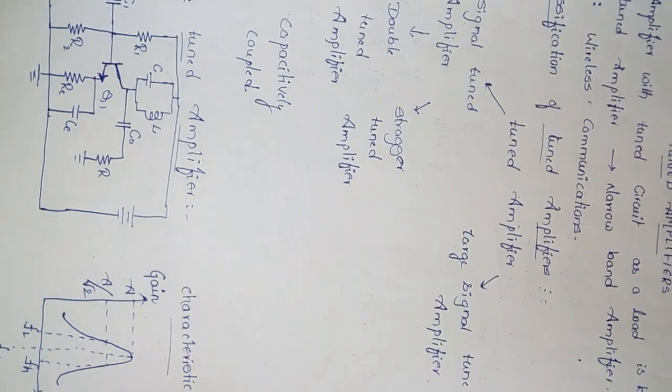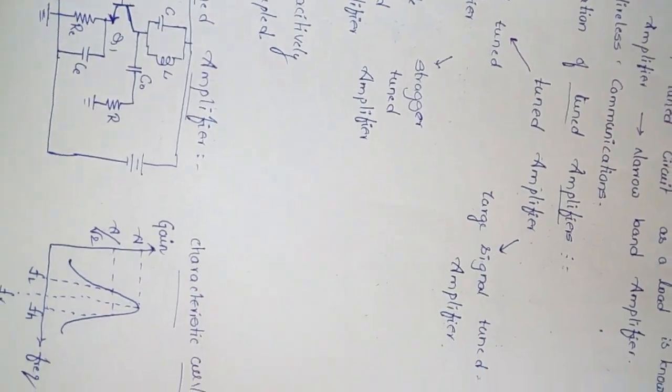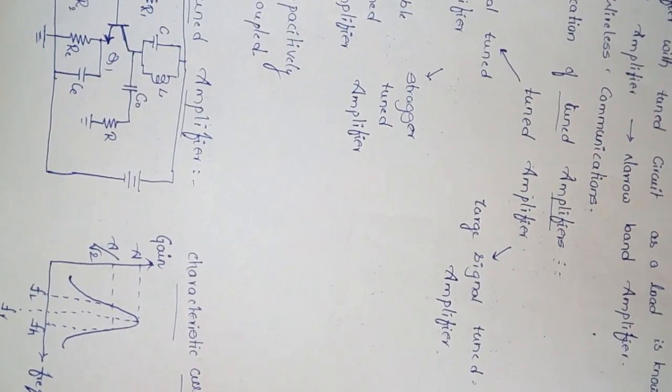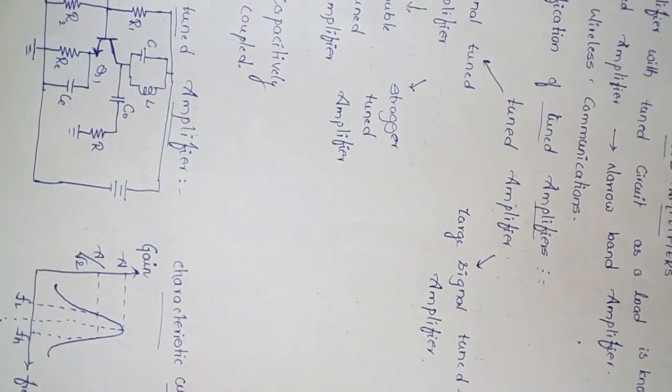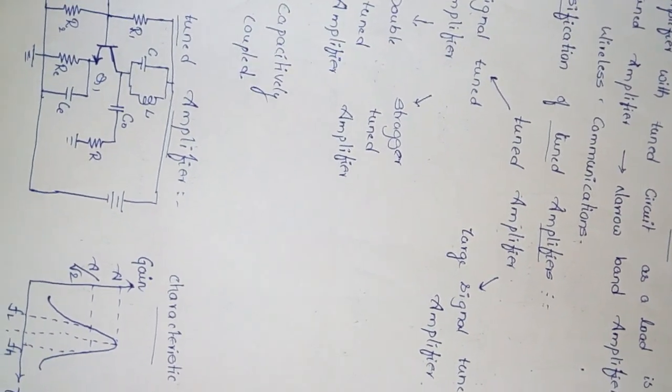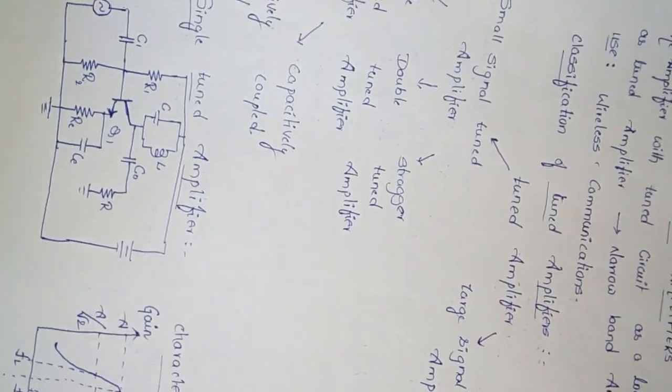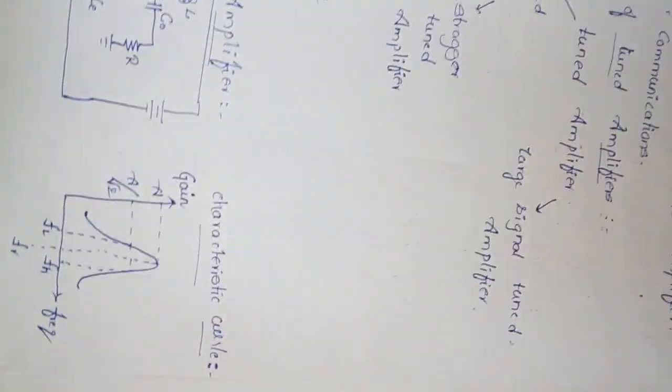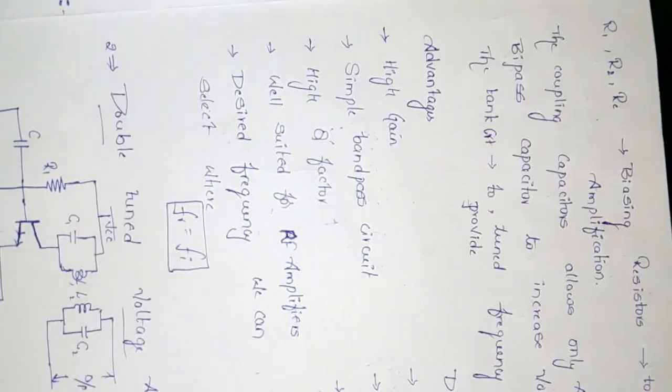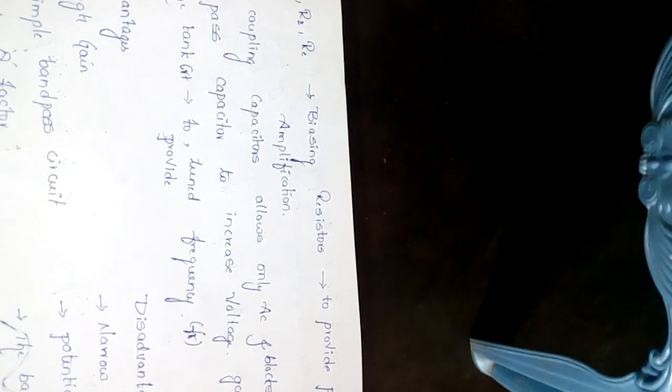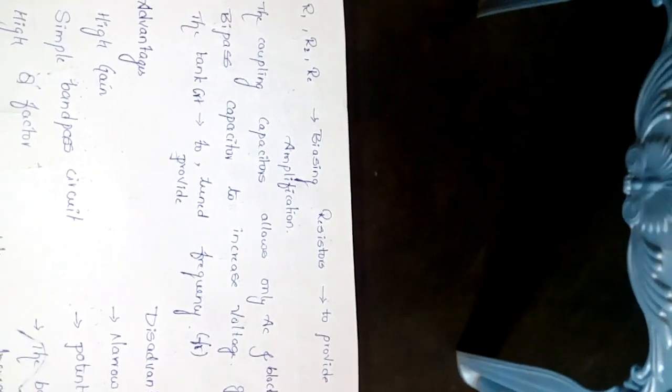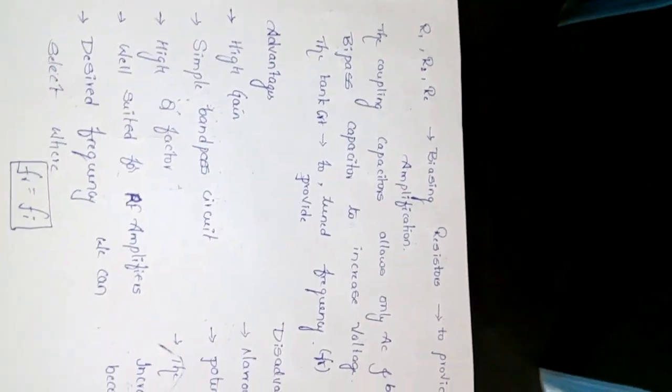The previously said R1, R2, and RA are used to provide better amplification. Coupling capacitors allow only AC and block the DC. The tank circuit provides tuned frequency, that is FR.